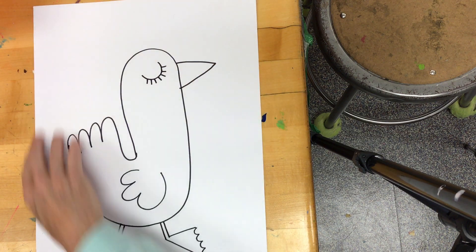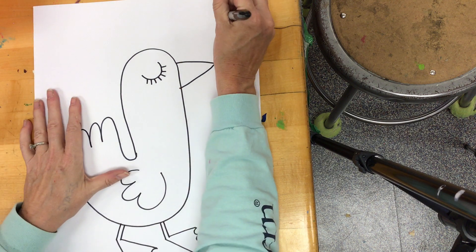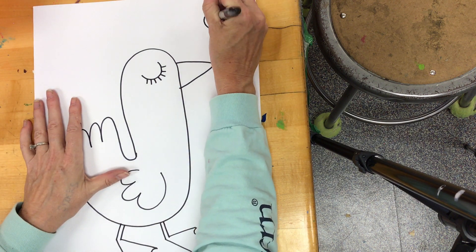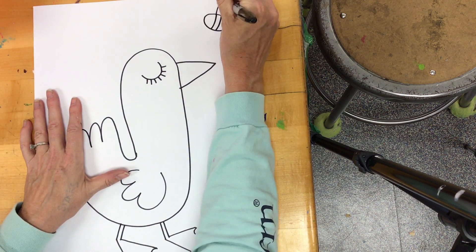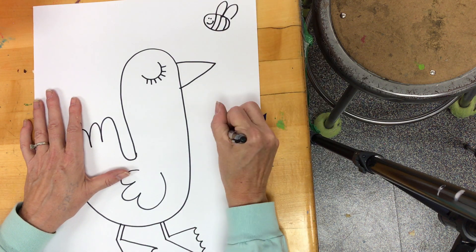Now, for your background, you need to think of some spring things. And so, you maybe want to draw a bee. Maybe you want to draw some flowers.